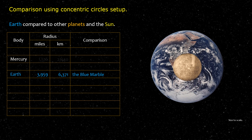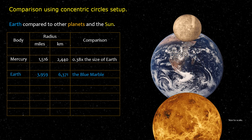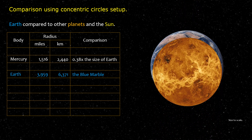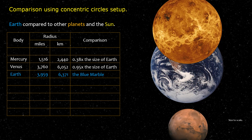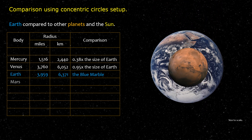Mercury is 0.38 times the size of Earth. Venus is 0.95 times the size of Earth. Mars is 0.53 times the size of Earth.